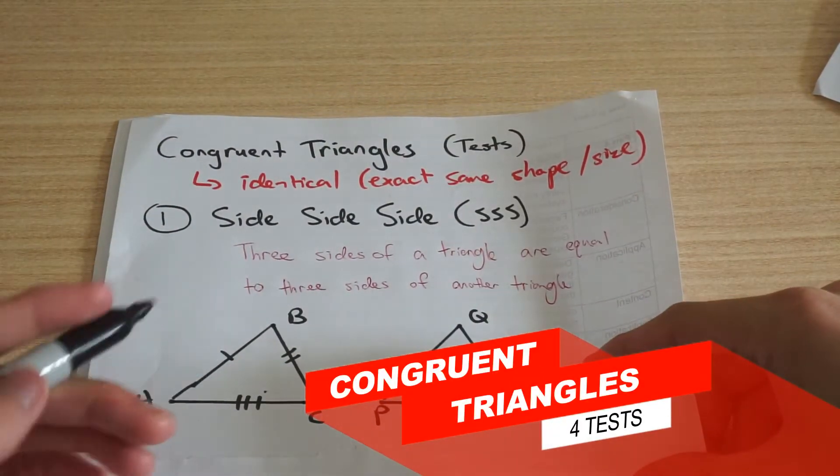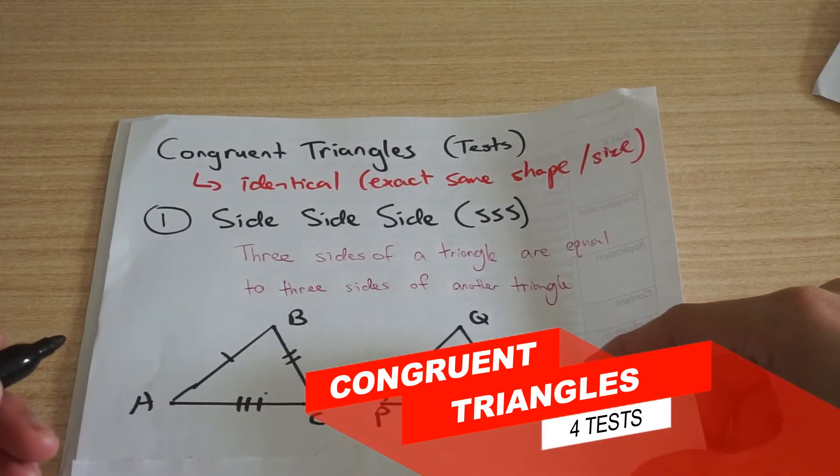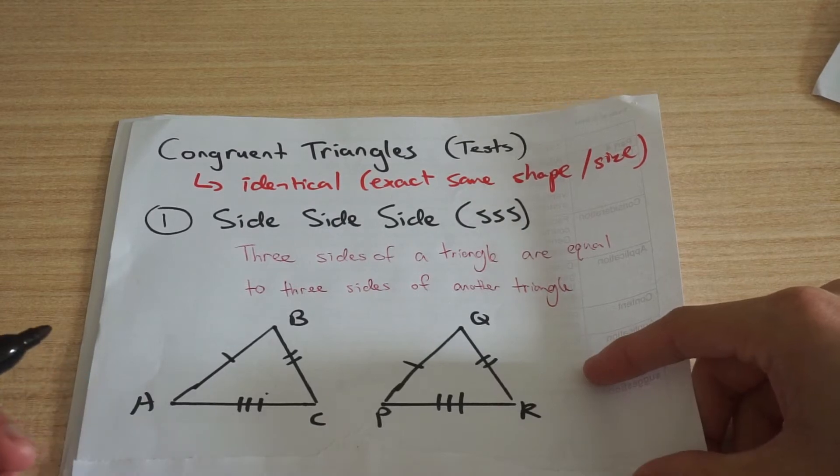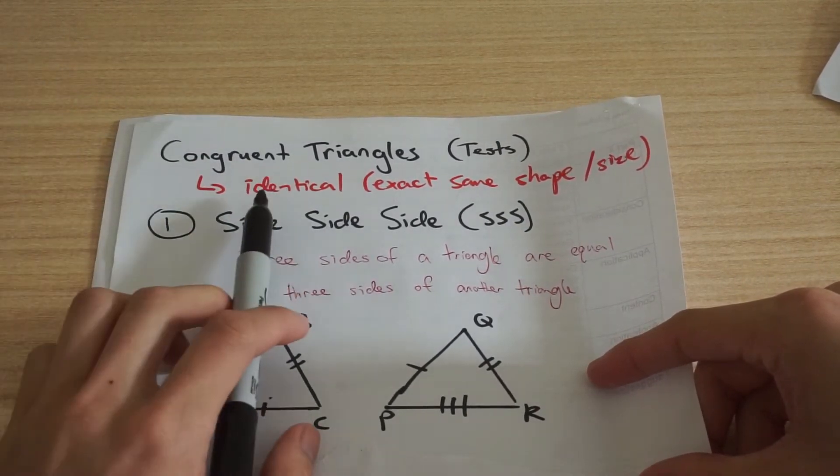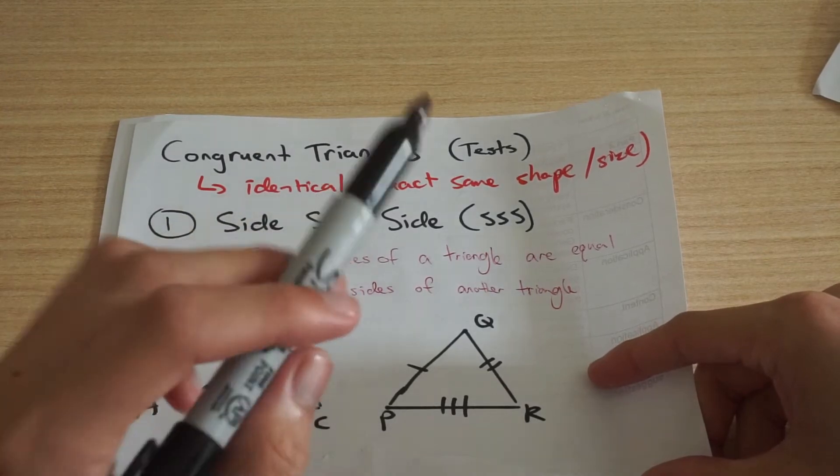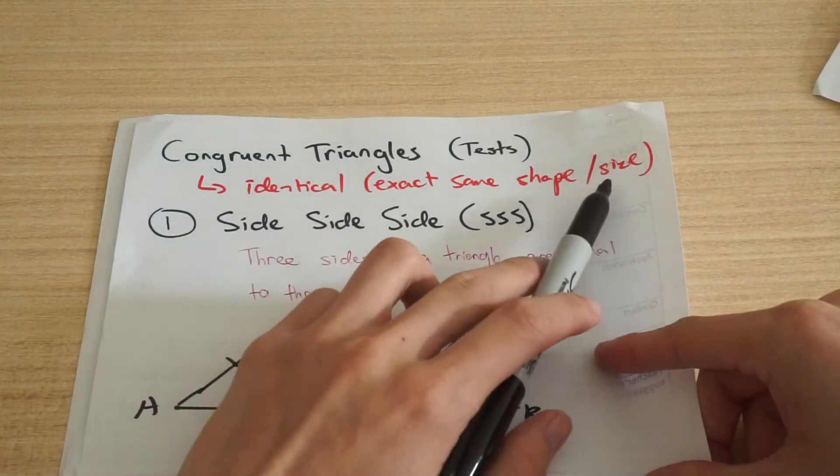Let's have a quick look at the tests we need to use for proving that triangles are congruent. First of all, what are congruent triangles? Well, they're ones that are identical, so the exact same shape and the exact same size.